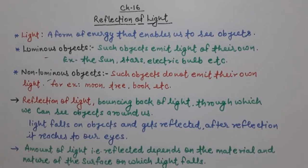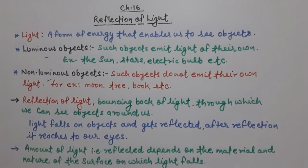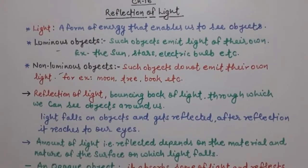Light falls on objects — it comes from any source, falls on various objects, and gets reflected from that object. After reflection it reaches our eyes, and because of that we are able to see various objects around us. The amount of light that is reflected depends on the material and nature of the surface on which light falls.